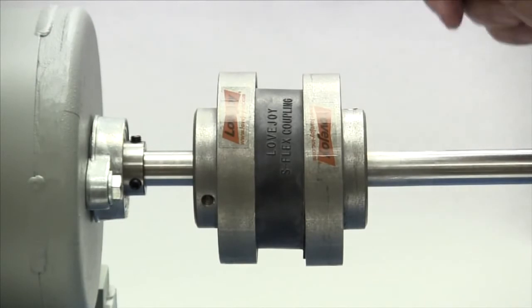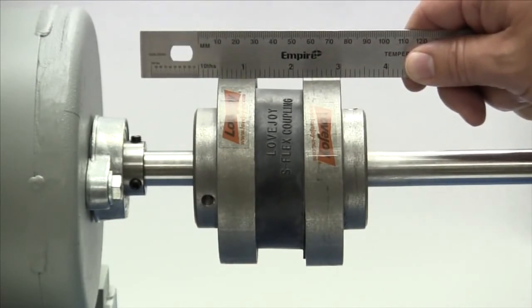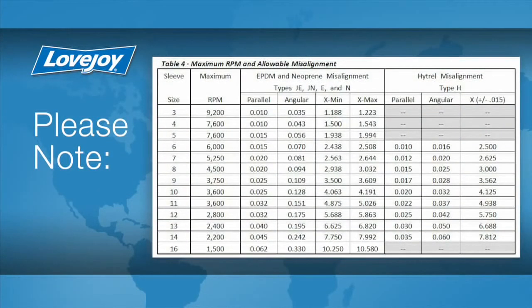To check the basic alignment, start by laying a straight edge across the major diameter of the flanges. The maximum allowable parallel offset should not exceed the amount for your particular coupling size found in the installation guide and shown here.